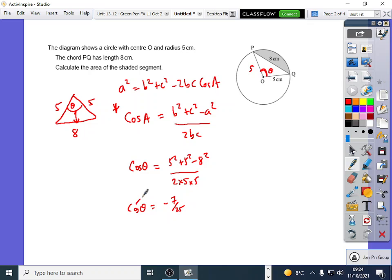And I'll get cos theta equals minus 7 over 25. And then because I want to find the angle, I always take the inverse of this function by pressing shift on my calculator. So I'll get theta equals shift cos answer, and you should get 106.3 degrees.